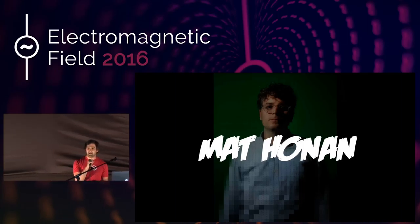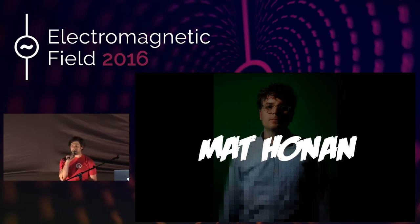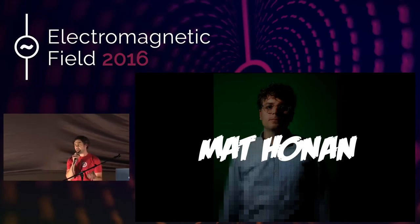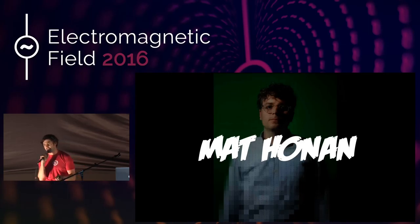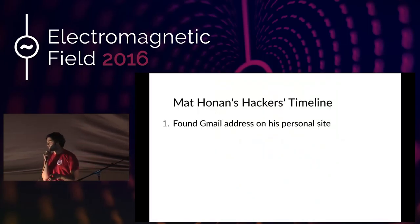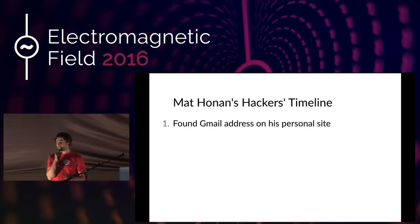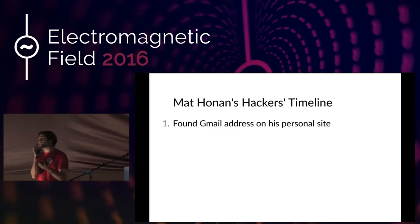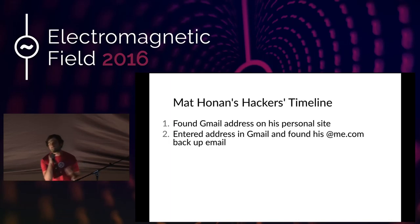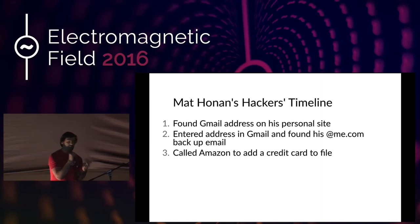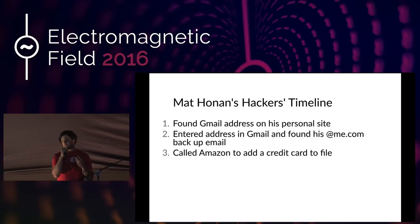We have a bit of a timeline of what happened. They found his Gmail address on his website — perfectly reasonable. They entered that into Gmail and found that he had a me.com account as the backup email address. So they called Amazon to add a credit card to his file. You have to talk them into doing it — they were after passwords or secret identification, but eventually it boiled down to his email address and a billing address, which they found on the WHOIS record for his domain.